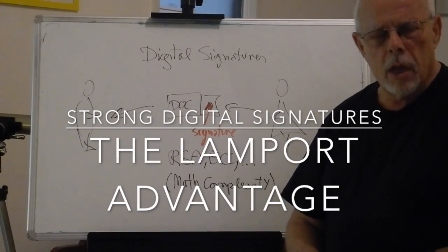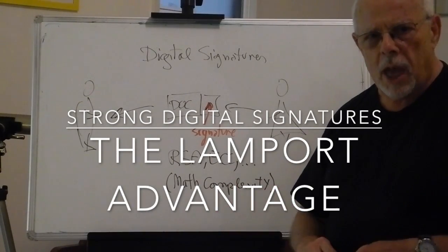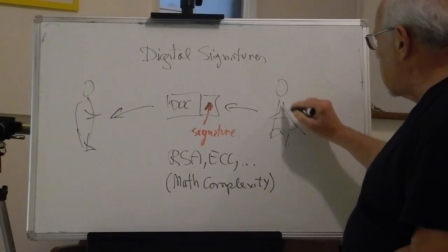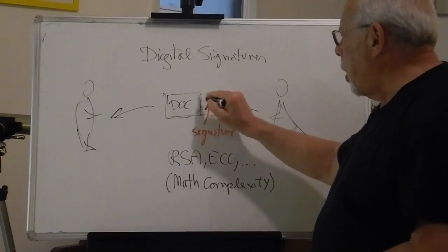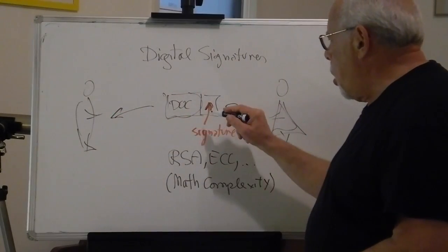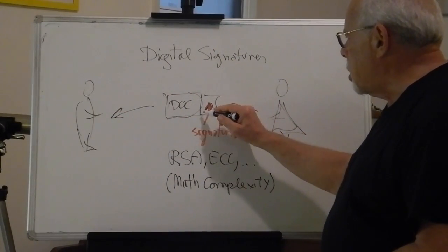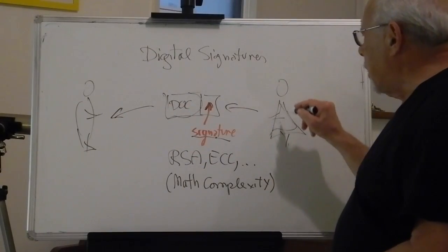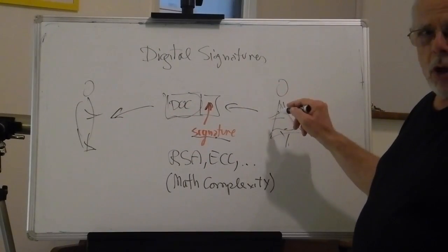Digital signatures. So much that we do in cyberspace involves a situation where Alice passes a document to Bob which she needs to sign so that Bob knows for sure that Alice wrote this document.